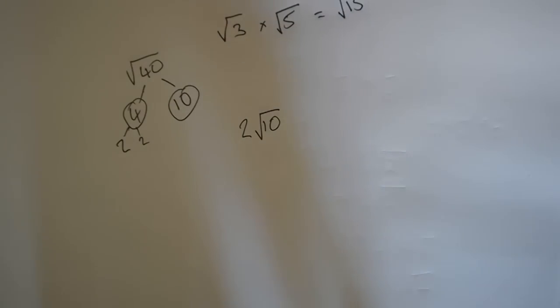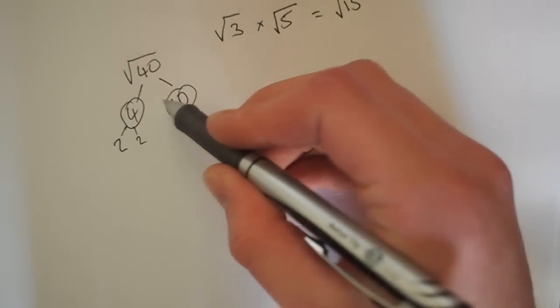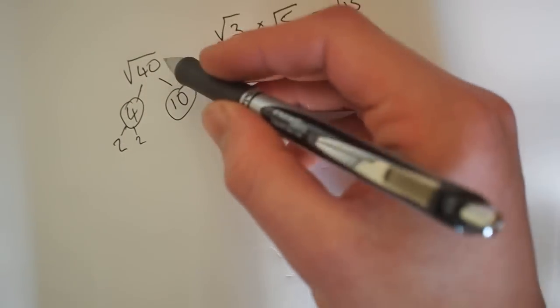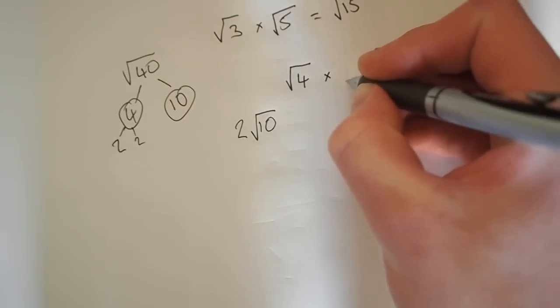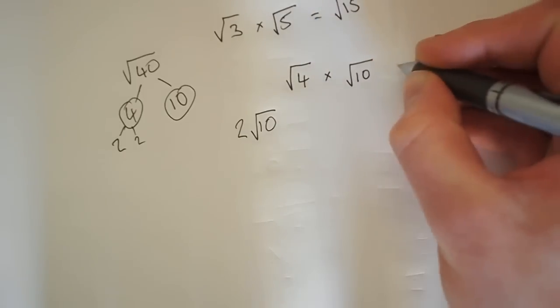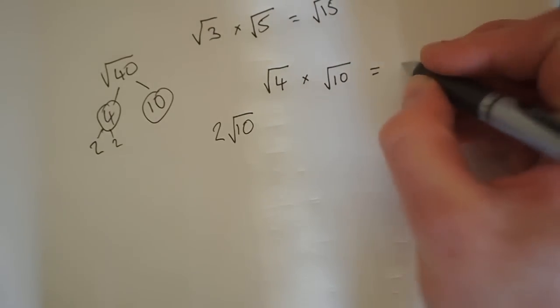Now saying that, if we have 40, this can be split into 4 and 10. So essentially it's 40, it can be written as 4 times 10. See that equals the square root of 40.